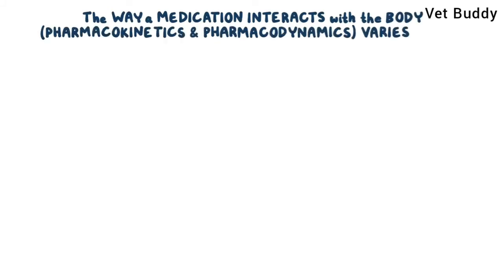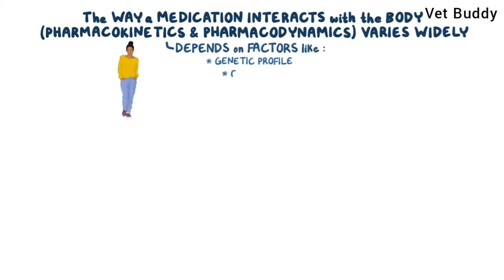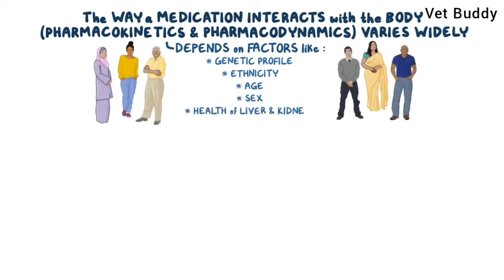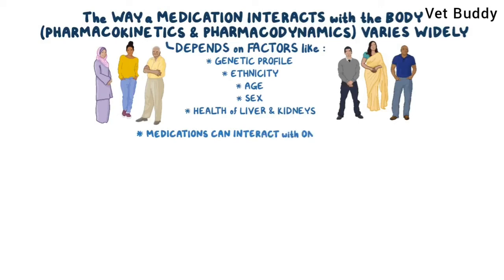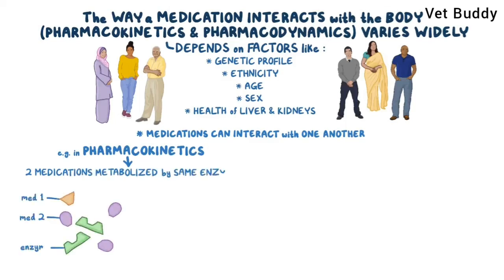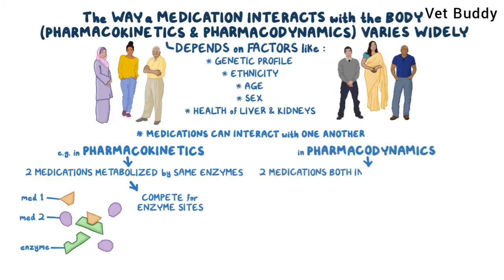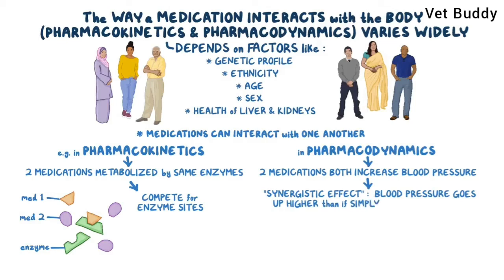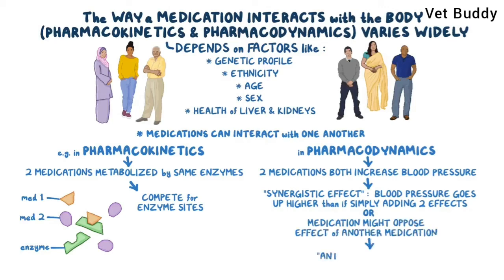The way a medication interacts with the body — both pharmacokinetics and pharmacodynamics — varies widely from person to person. It depends on factors like a person's genetic profile, ethnicity, age, sex, and the health of their liver or kidneys. Medications can also interact with one another. In pharmacokinetics, two medications may be metabolized by the same enzymes, so they compete for the same enzyme sites. In pharmacodynamics, two medications might both increase blood pressure, producing a synergistic effect, or one medication might oppose another, thereby having an antagonistic effect.